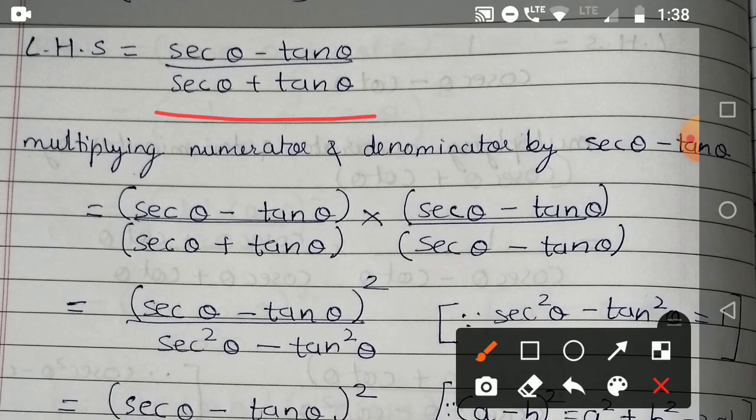Now in this LHS, as you can see, we cannot do any operation because sec θ, tan θ are single terms. To bring the answer, what we require...